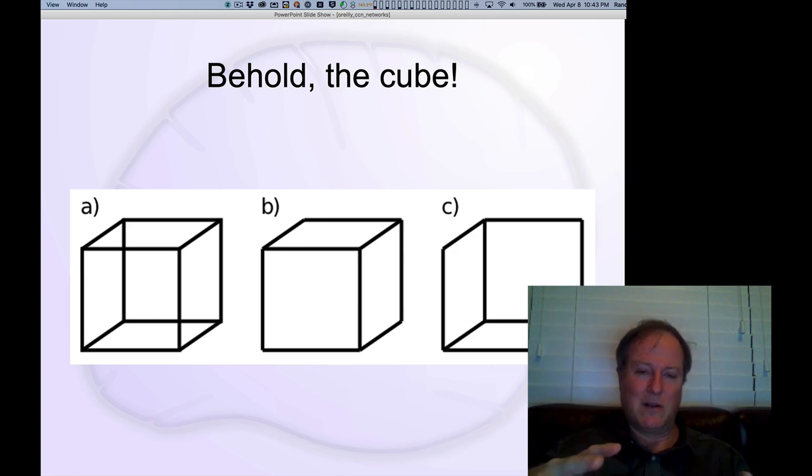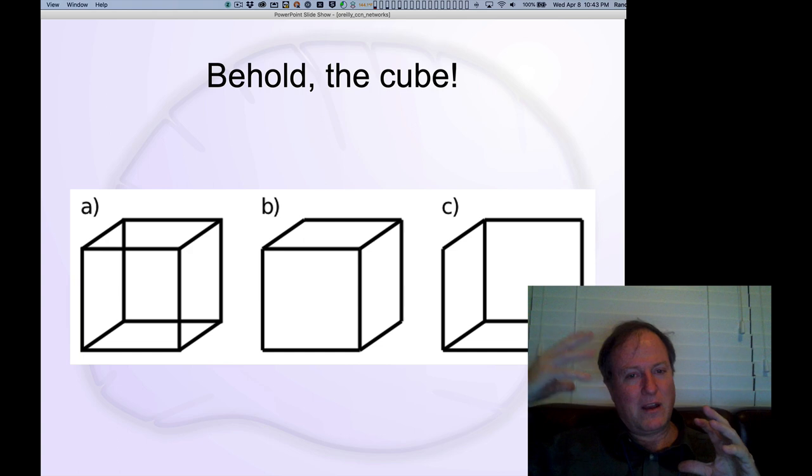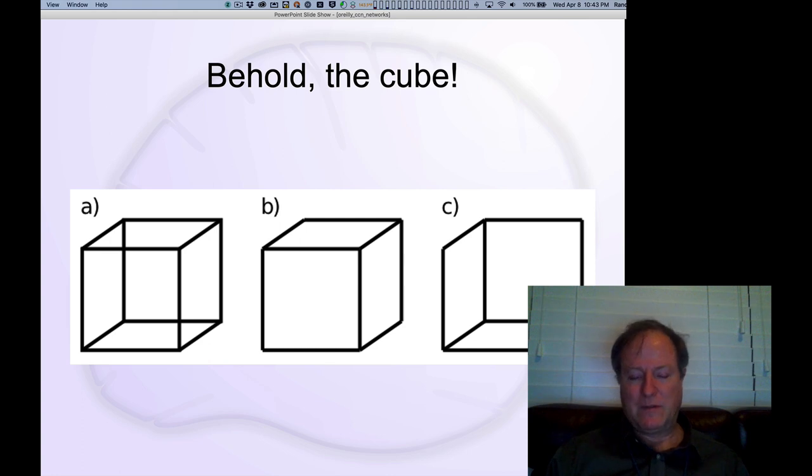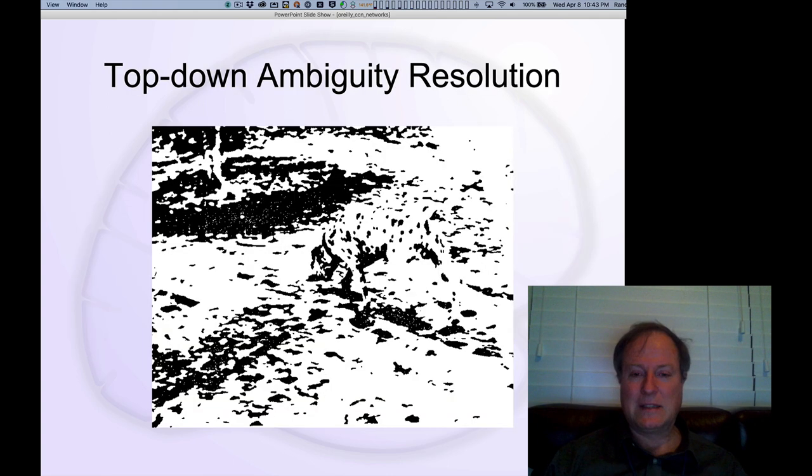That process involves this dynamic between the lower level visual inputs that are coming in and these higher level internal concepts of ways that the world might make sense. It's trying to find the best match between those. In the real world, sometimes it seems like people are a bit delusional, imposing these top-down high-level interpretations where perhaps they don't really fit so well. This doesn't necessarily always work in the most veridical way, but you can see that it's very important pragmatically for dealing with these complex scenes.